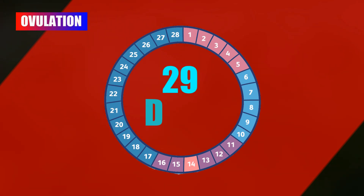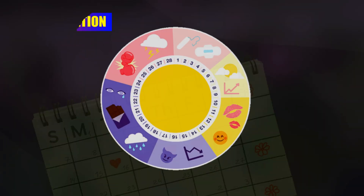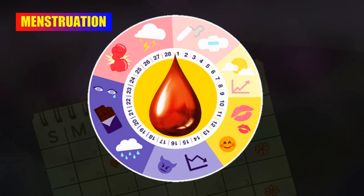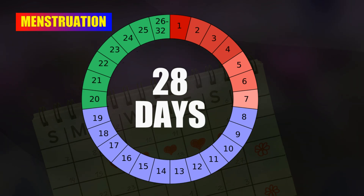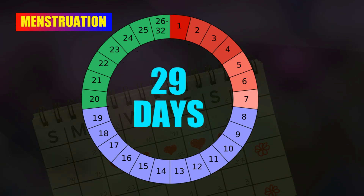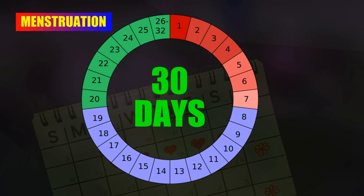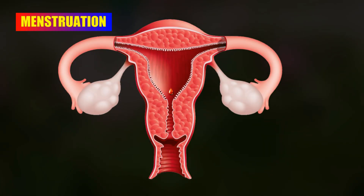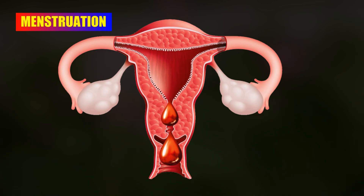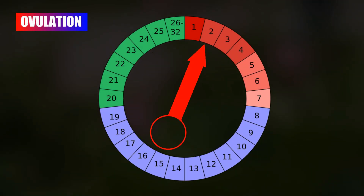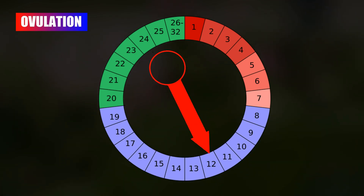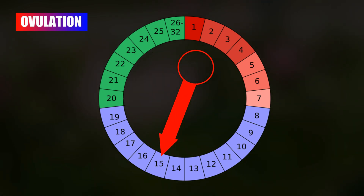Menstruation means the period cycle. The length of this cycle is 28 days but it can also be 27, 29, or 30 days. Women discharge bleeding over a period of time, and this bleeding stays normally for five to seven days. Normally, ovulation dates start in the 15th day of the women's cycle.